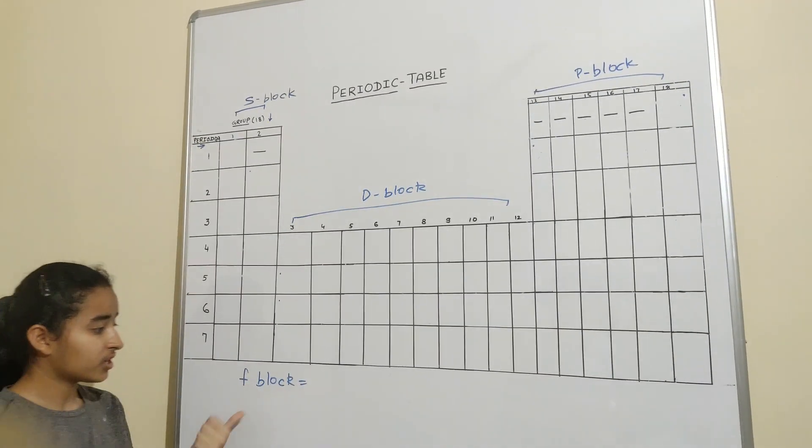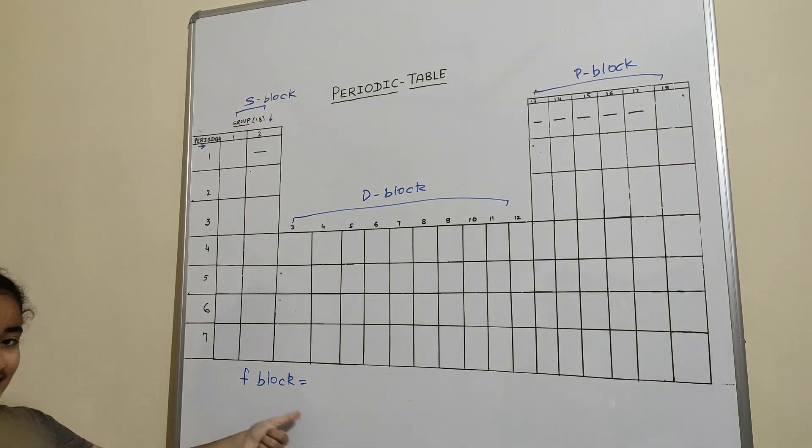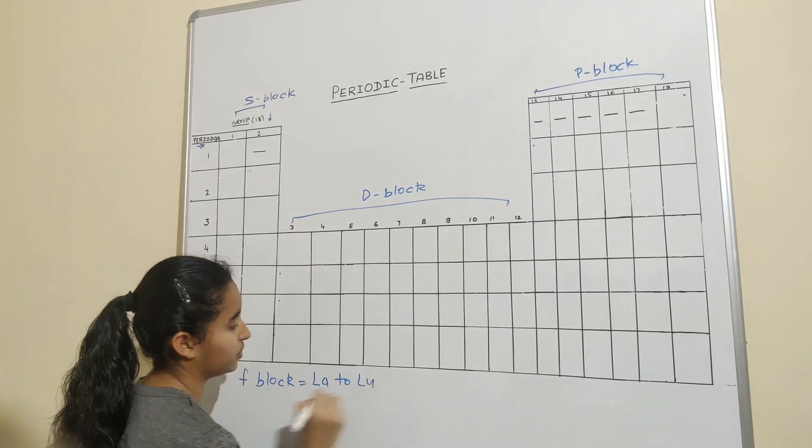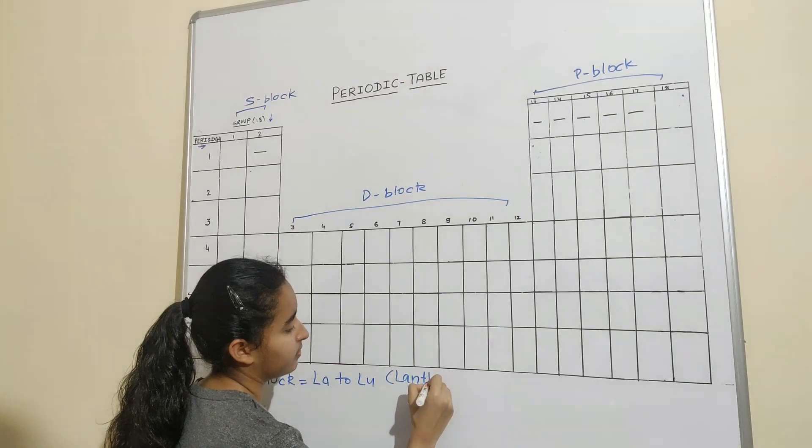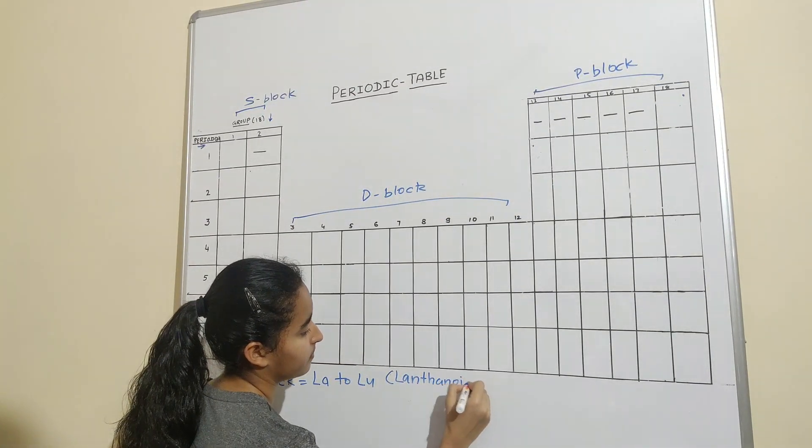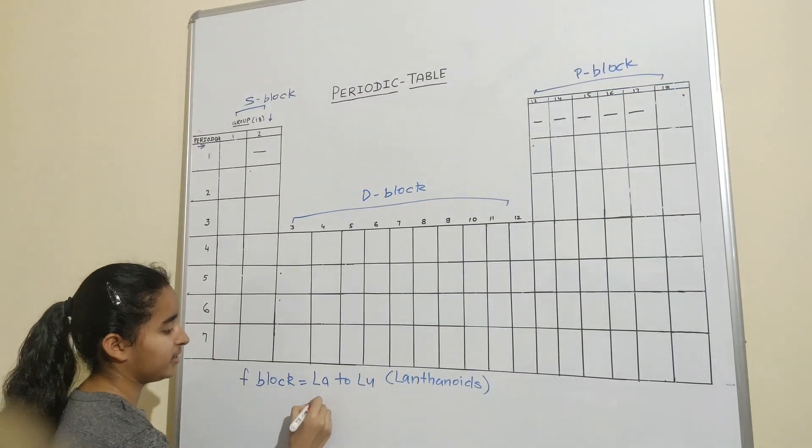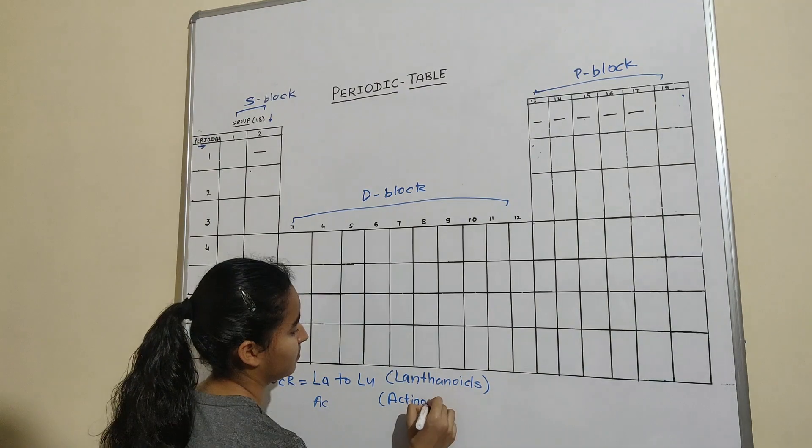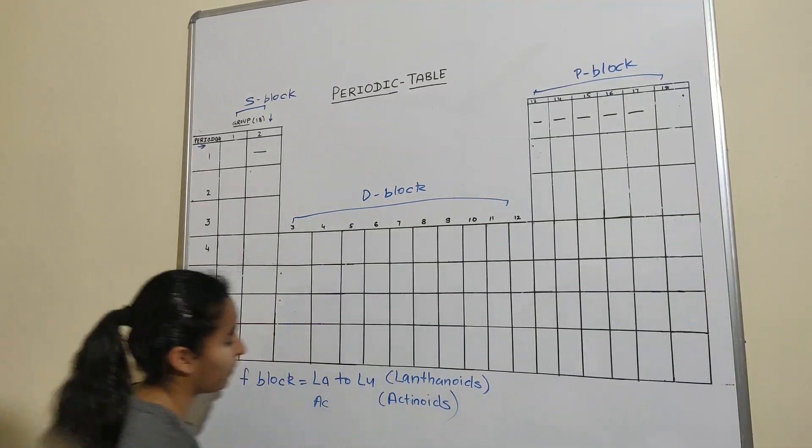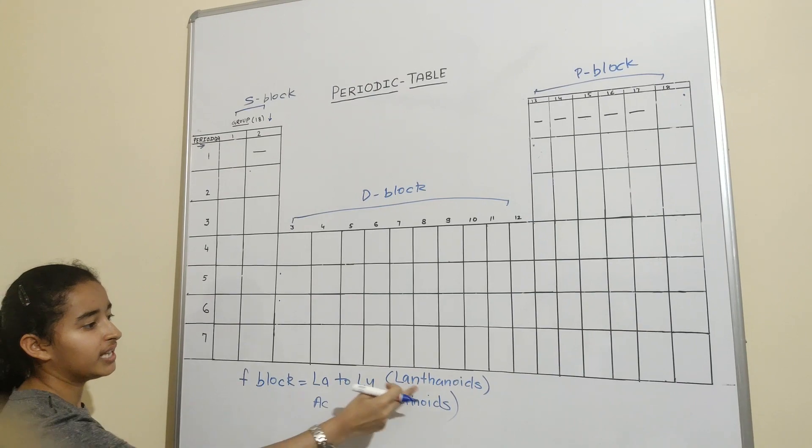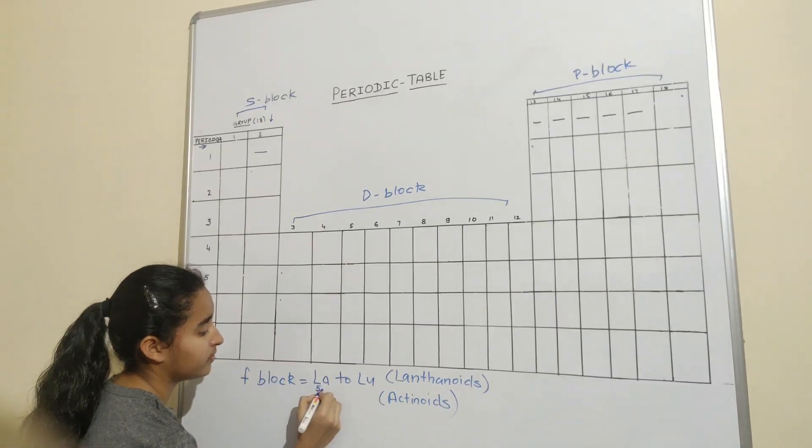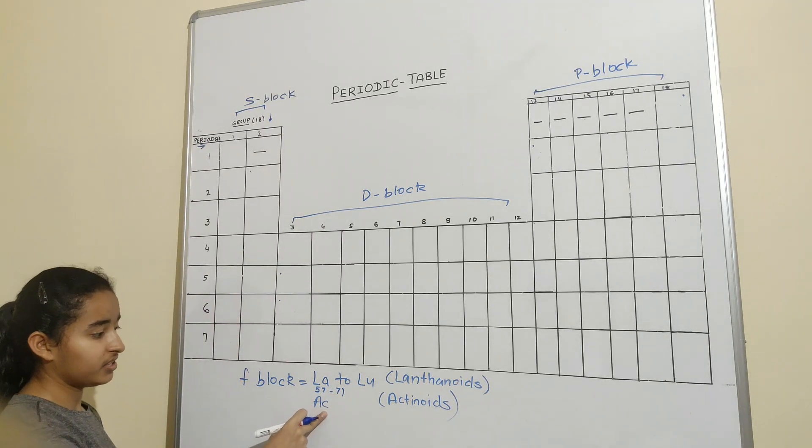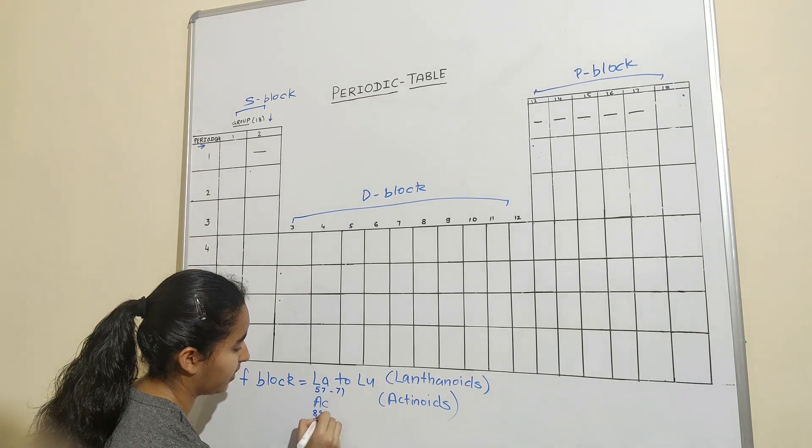So F-block consists of lanthanoids and actinoids. That starts from La to Lu, they're called as lanthanoids, and from Ac onwards it goes with the actinoids.